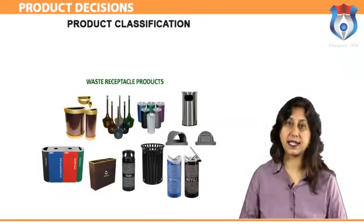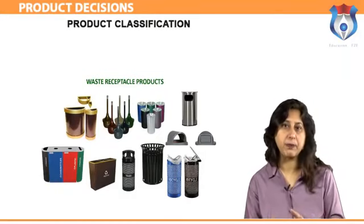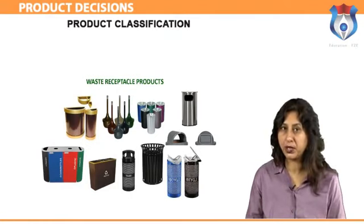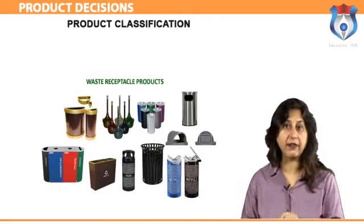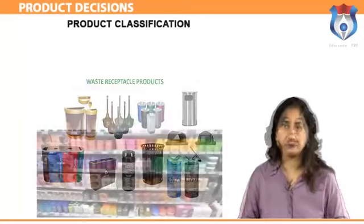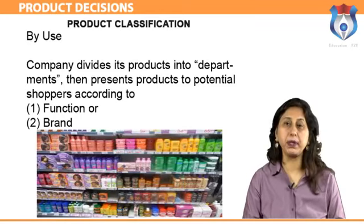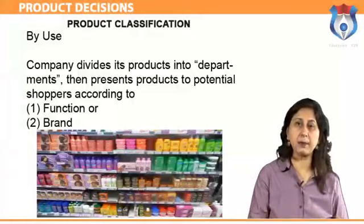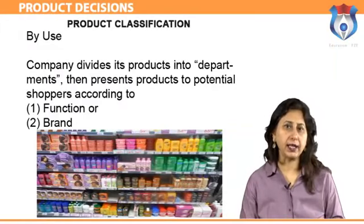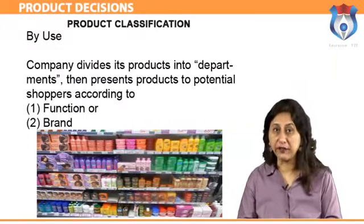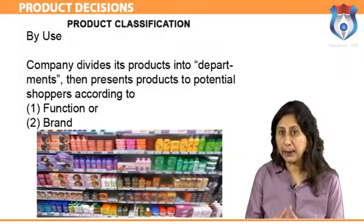Products can be classified as tangible or intangible. A tangible product is a physical object that can be perceived by touch, such as a house, automobile, computer, or pencil. An intangible product is a product that can only be perceived indirectly, such as an insurance policy. In its online product catalog, retailer Sears Roebuck and Company divides its products into departments, then presents products to potential shoppers according to function or brand. Each product has a Sears item number and a manufacturer's model number.